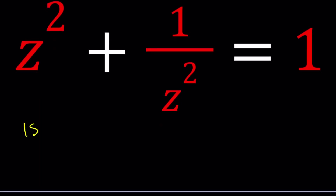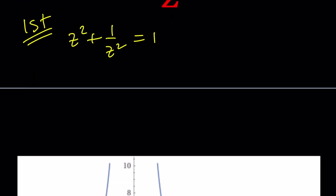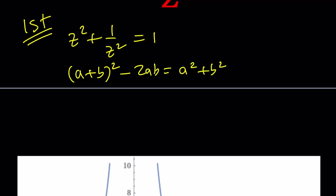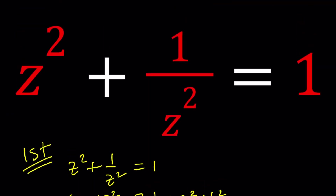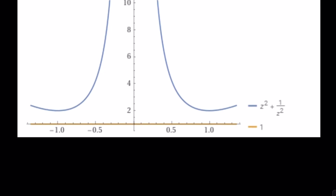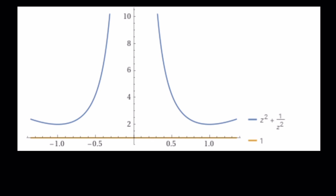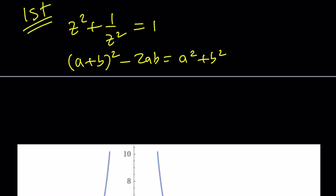For my first method, I'm going to use an identity. But before we start solving this with the first method, let's take a look at the graph of these two functions: z squared plus one over z squared, and one. If you actually graph them, you're going to notice that they don't have any intersection points, which means there are no real solutions. And that kind of makes sense because this channel is all about complex numbers.